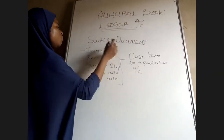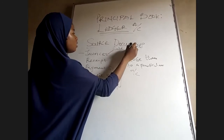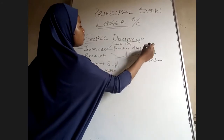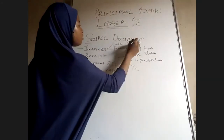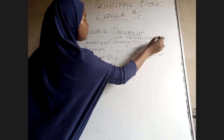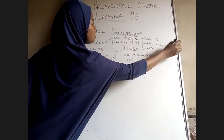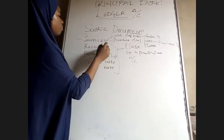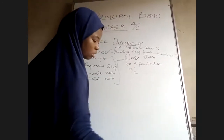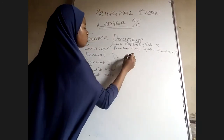For example, invoices mostly deal with the sales daybook and purchases daybook. A sales daybook is closed to something we call a sales account. The purchase daybook is closed to something we call a purchase account. Receipts and payment slips generally apply to your cash book.